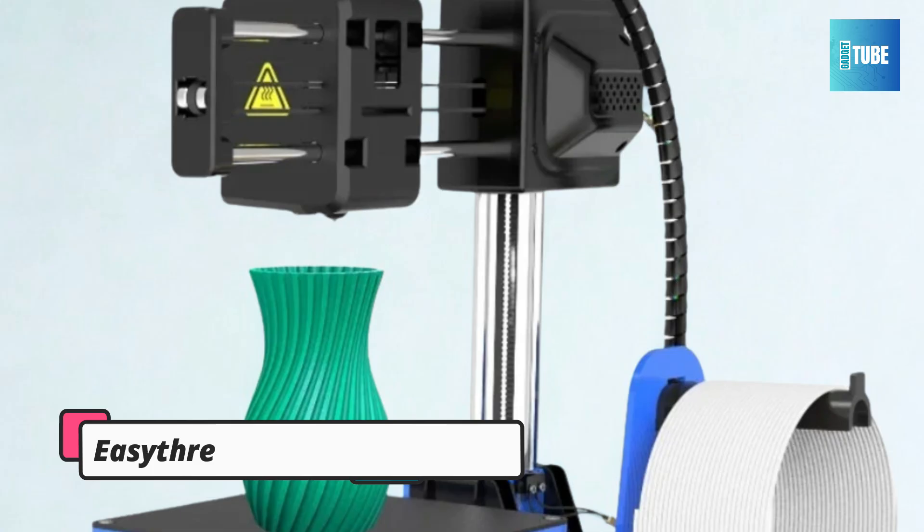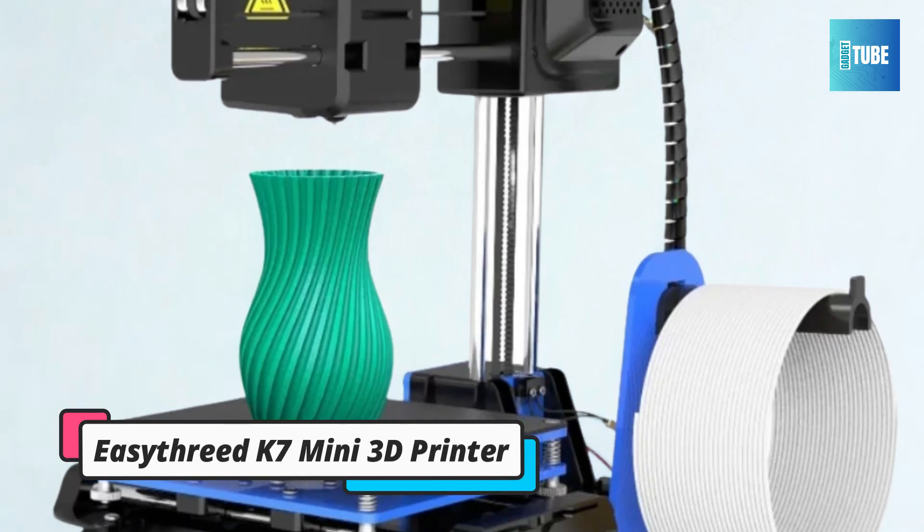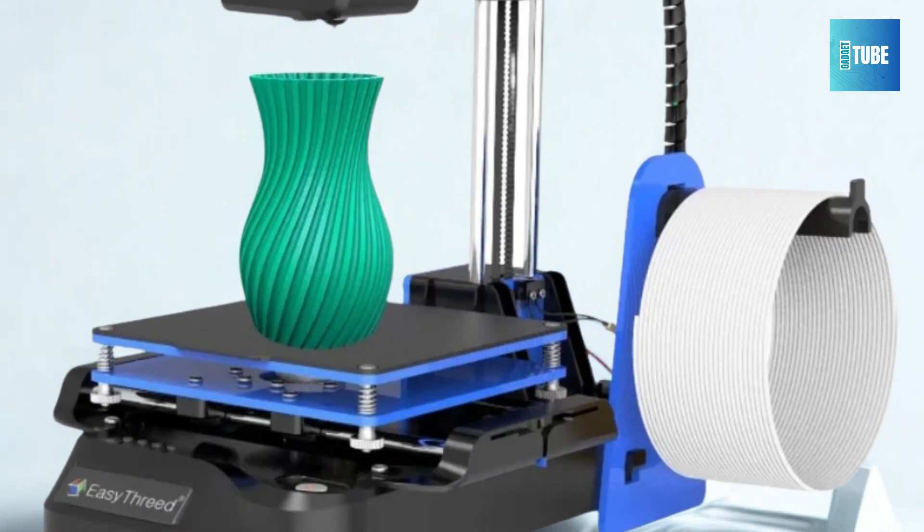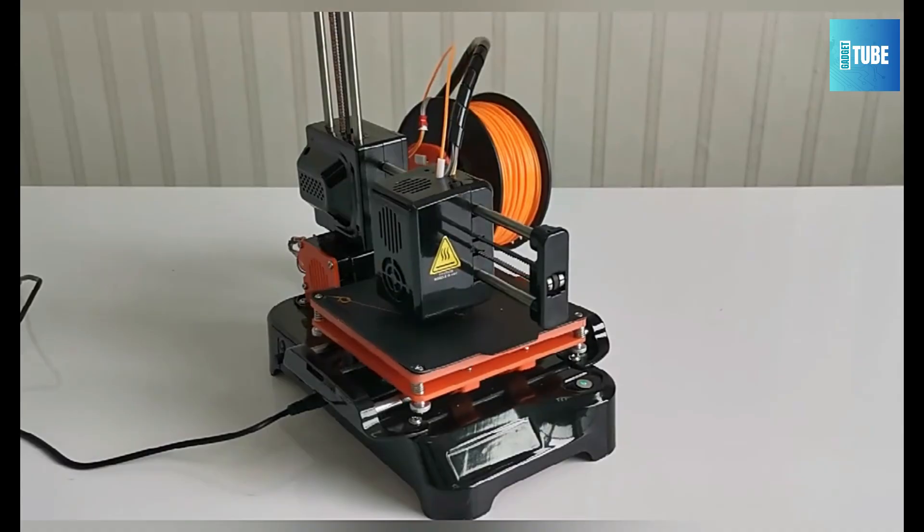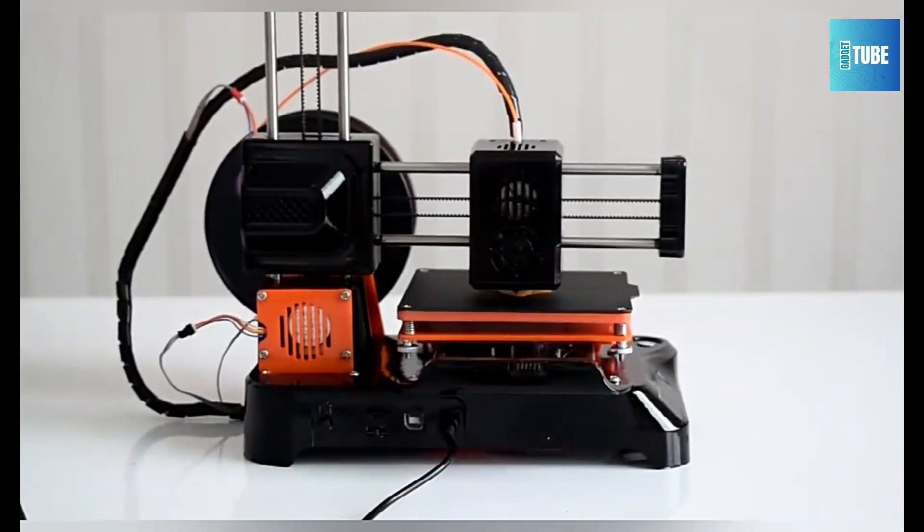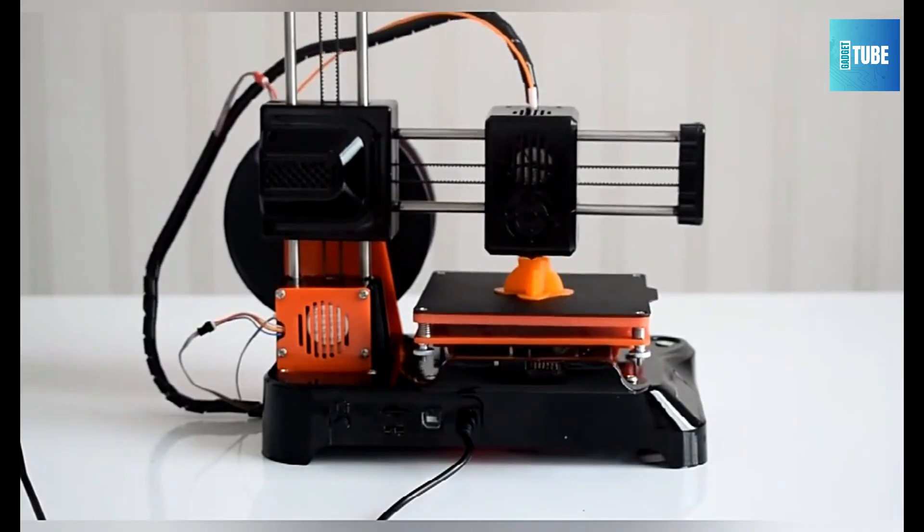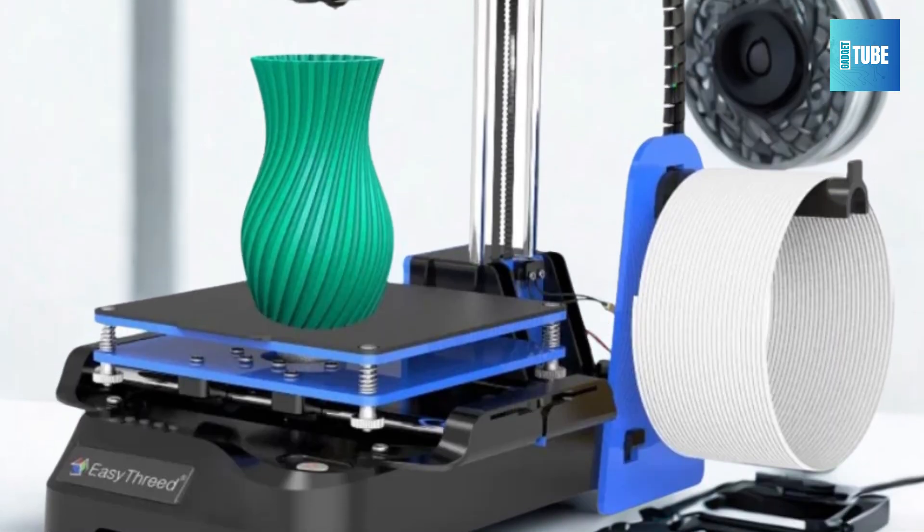Number 5. EZ3D K7 Mini 3D Printer. The EZ3D K7 Mini 3D Printer, a compact, beginner-friendly printer built for simplicity and safety. Designed especially for kids and first-time users.